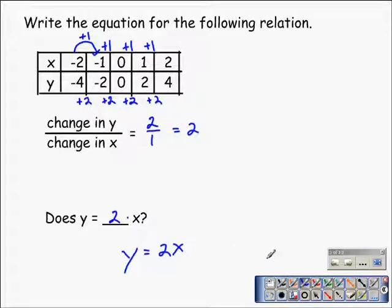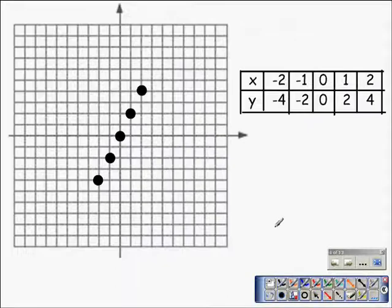Now, let's take a look at these points on a graph. Here's the same table, the same pairs of numbers. To go from this point negative 4, negative 2, we have to travel up 2 and then to the right 1.